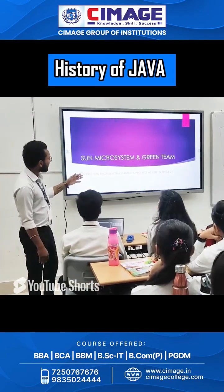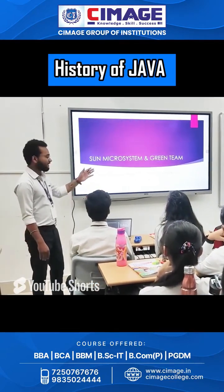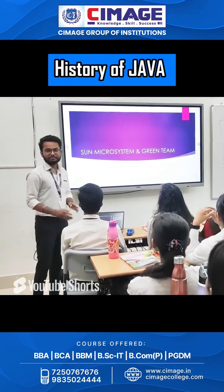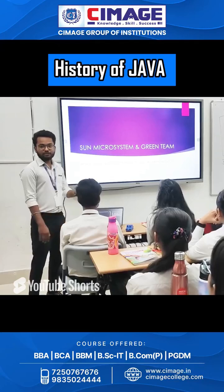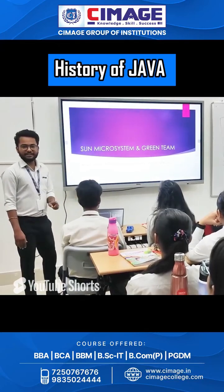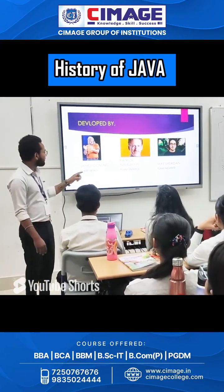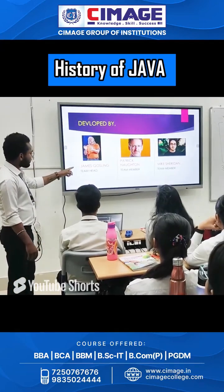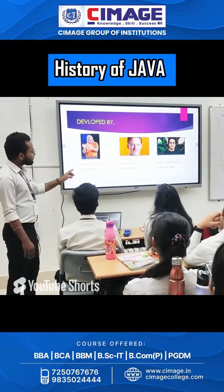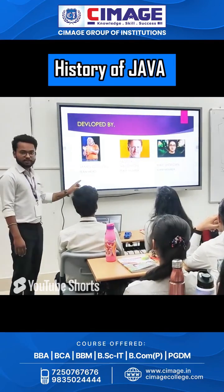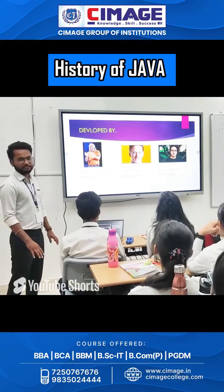The history of Java starts with Sun Microsystem Company and its Green Team. In the early 90s, Sun Microsystem started a project called the Green Project, and for this they appointed a team of three members. The first one was James Mustink, who was the head of that team. The second was Patrick Norton, and the third one was Mike Seridan, both members of that team.